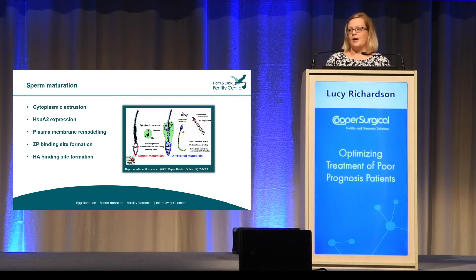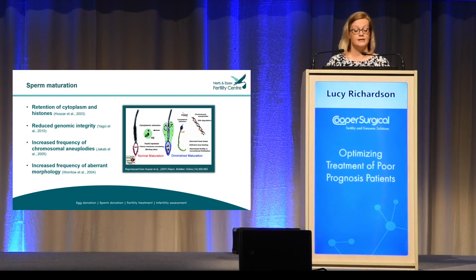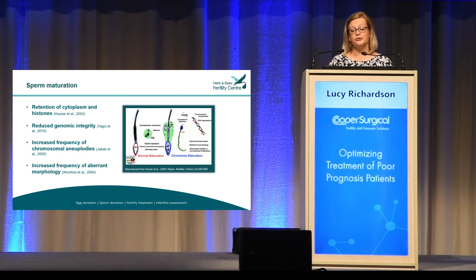Where that maturation fails, we're going to see a negative impact on the sperm. We may find we have retention of cytoplasm and histones, reduced genomic integrity, and an increased frequency of chromosomal aneuploidies. Quite often, these sperm are of poorer morphology — but not always.